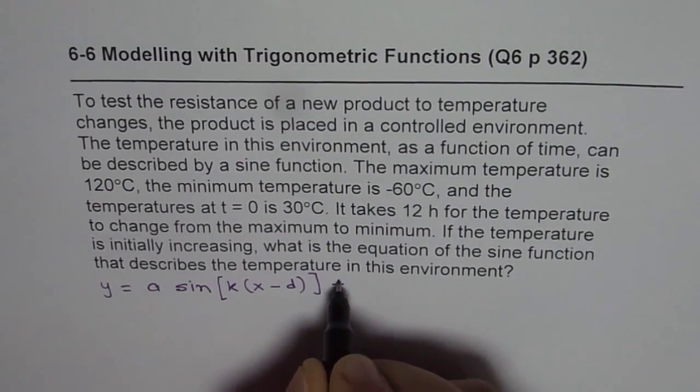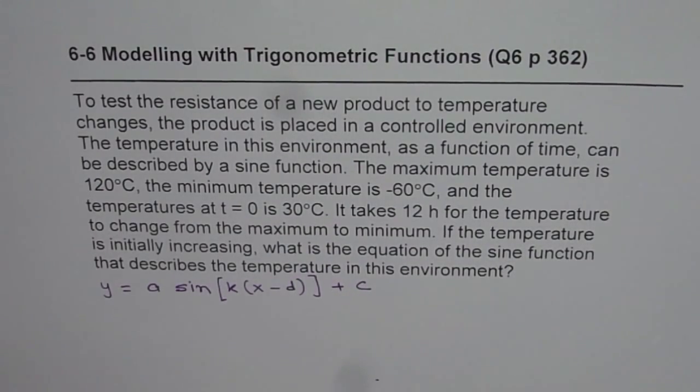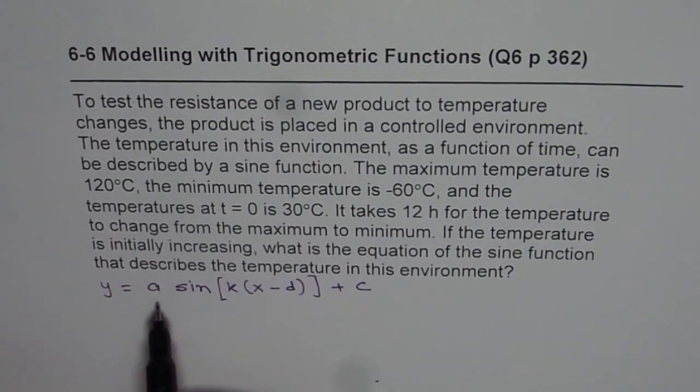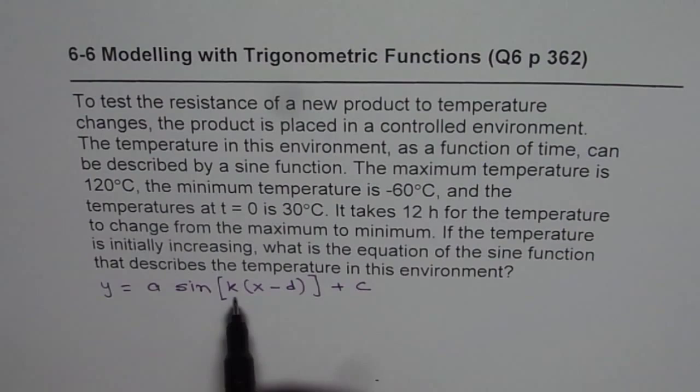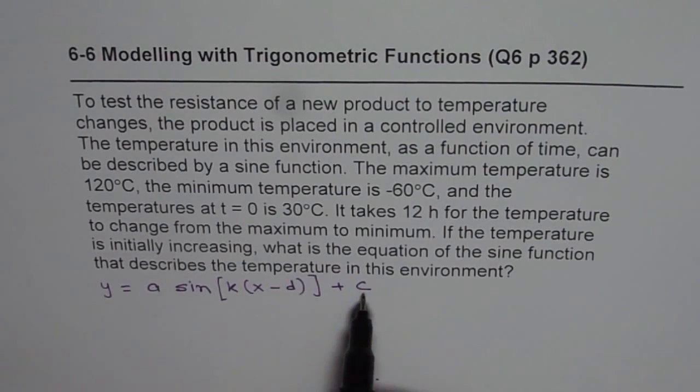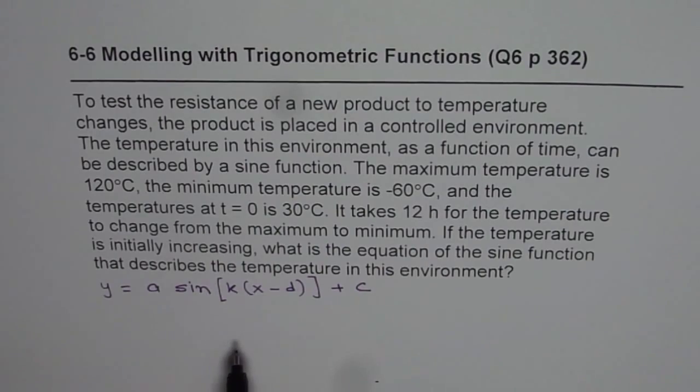That is the general form of the equation where a is the amplitude, k is the number of cycles in 2π, d is horizontal translation or phase shift, and c is the vertical translation or the axis for this particular function.